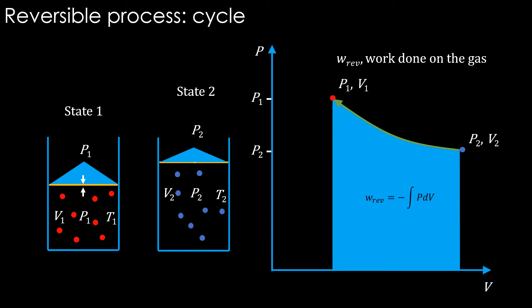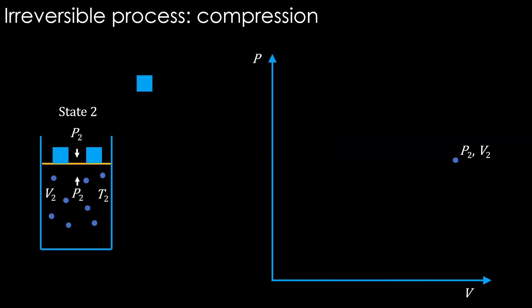The negative symbol is also to represent that it is work done on the system. In the forward and backward processes, that is the expansion and compression, the magnitude of the work done is the same and the signs are opposite. So if the compression is done in a reversible manner following the same path, then the total work done in the entire cycle of expansion and compression is zero.